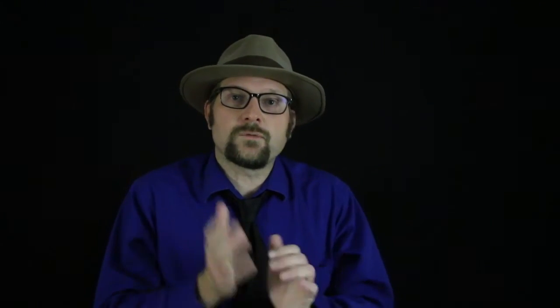In Asia, there were also mesaxonic mammals living during the Paleocene, and they appear to be the direct ancestors of perissodactyls — the mom and dad of the group. One of the most interesting fossils is Radinskya, known from the Middle Paleocene of Asia, which looks very tapir-like, or more likely like a primitive isectolophid — a group of extinct perissodactyls better known from the Eocene.